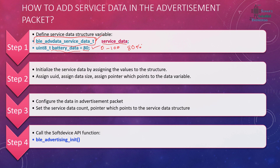The next step is to initialize the service data by assigning values to the structure: assign a UUID, assign the data size, then assign a pointer which points to the data variable. The data size in this case is just one byte. The third step is to configure the data in the advertisement packet and set the service data count.